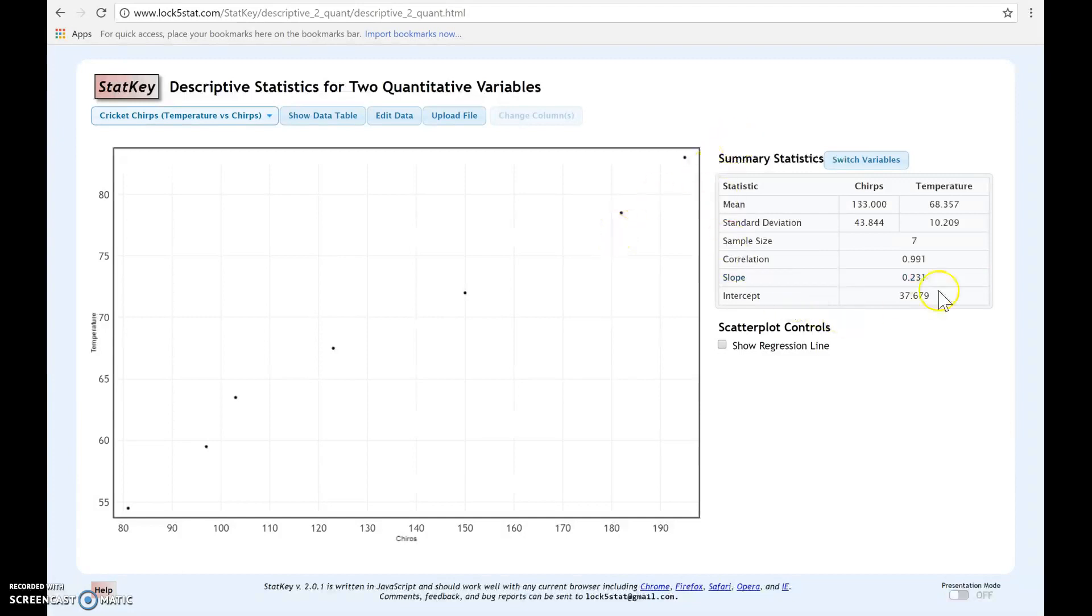Notice here are some summary statistics that StatKey is going to give us. It's going to give us the mean for each of the variables, chirping and temperature, as well as the standard deviation for each. The sample size.